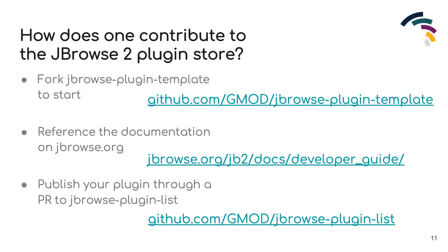Plugins can be used on both web and desktop JBrowse instances without any additional intervention by the developer. When your plugin is complete you can either run it locally by adding it to your config file, or you can publish it to the community by making a pull request to the JBrowse plugin list, where it will then appear in the plugin store.